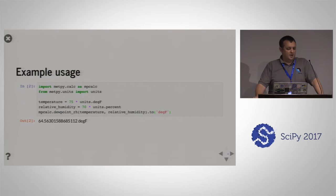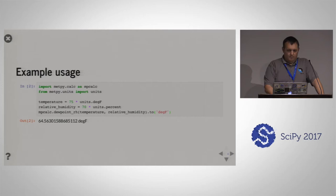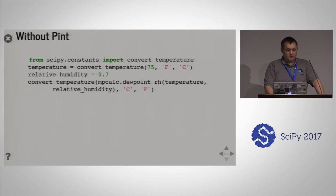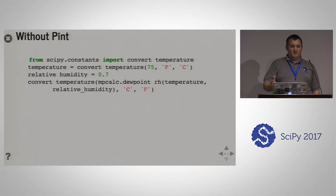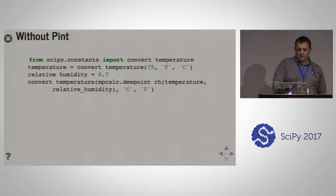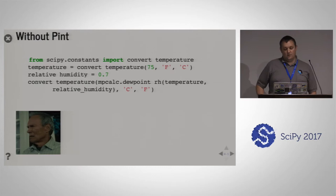Here's an example usage of Pint. We do some imports from MetPy, take a temperature and multiply it by degrees Fahrenheit, take a relative humidity value and multiply it by units percent, then throw that into a function to calculate dew point and convert the output to degrees Fahrenheit. It reads very straightforward. Compare that to doing it without Pint — you have to use SciPy constants for temperature conversion, which doesn't read well. That just makes me sad to see.